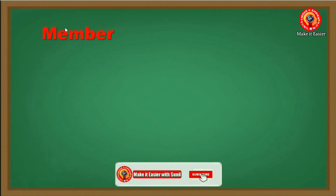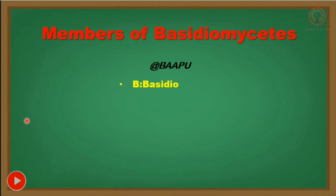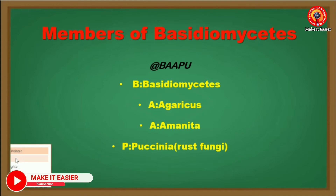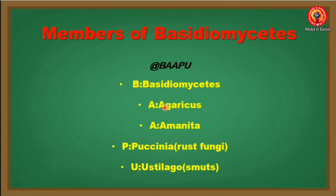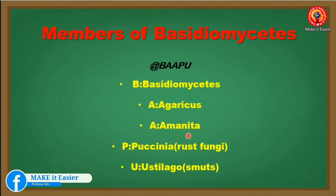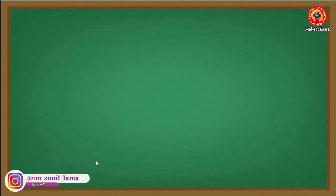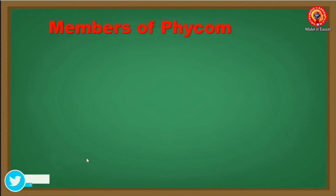To remember the members of Basidiomycetes, you need to memorize the mnemonic 'BAPU', where B stands for Basidiomycetes, A for Agaricus, A for Amanita — which is the most poisonous fungus, also called toadstool — P for Puccinia, also called rust fungi, and U for Ustilago, also called smuts.